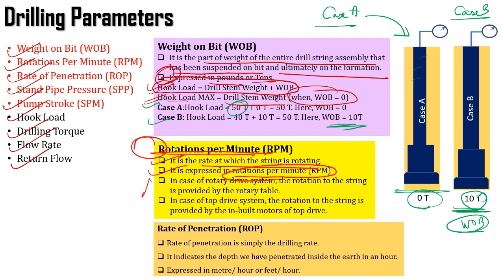There are two types of systems: the rotary drive system and the top drive system. In the rotary drive system, we have a rotary table, and by using that rotary table, we give rotation to the string. When it comes to the top drive system, the rotation to the string is provided by the inbuilt motors present in the top drive system.